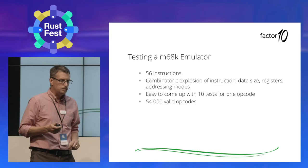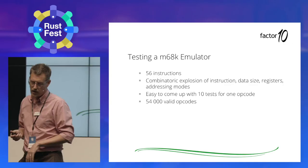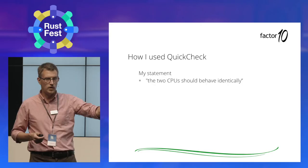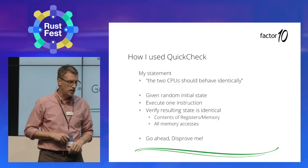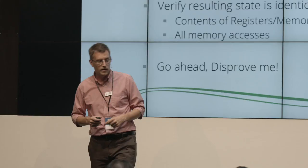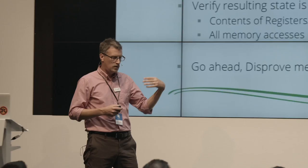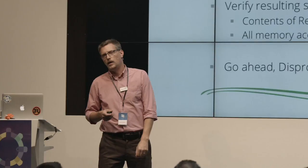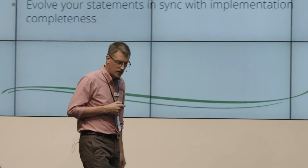I knew then that I needed QuickCheck because I couldn't possibly write enough tests. So I made a statement that said these two CPUs — Musashi and R68k — should behave identically. By identically, I mean: given random initial state, execute one instruction, and verify that the resulting state is identical. Verifying state means checking the contents of registers and memory, as well as verifying that all memory accesses are of correct size and alignment. Then I told QuickCheck to go ahead and disprove me on this. And it did — repeatedly, remorselessly, kind of annoying, but ultimately helpful.